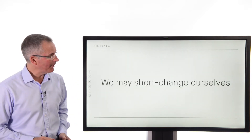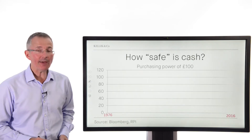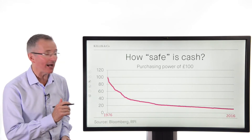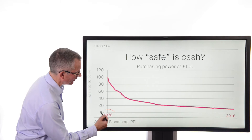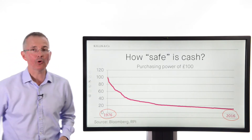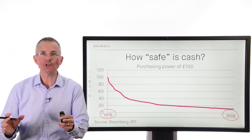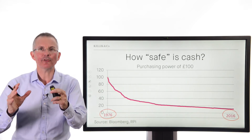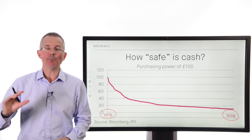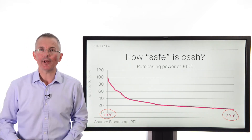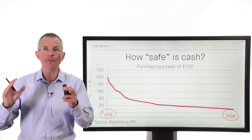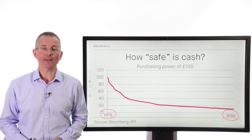How could I justify that statement? Well, we might be shortchanging ourselves. How safe is cash? The purchasing power of £100, between the mid-1970s and closer to today, has shrunk fairly dramatically according to that graph. Why? Inflation. Inflation erodes silently and persistently the spending power of cash. So £100 in the top drawer might look the same when you pull it out in 2016–2017, but £100 would have bought just under £10 worth of goods and services rolling forward over that length of time.